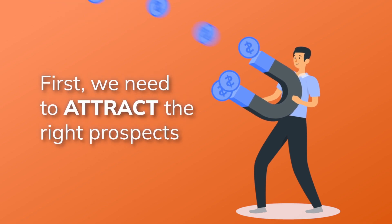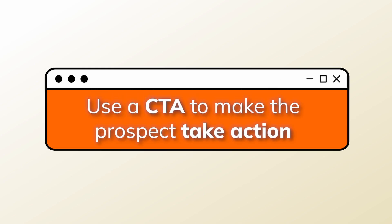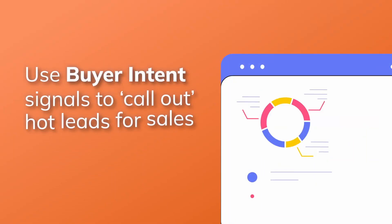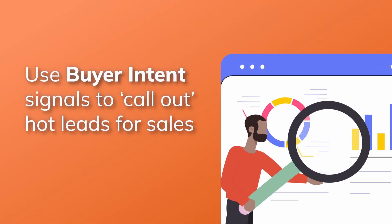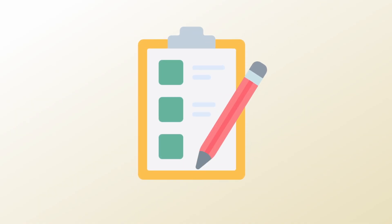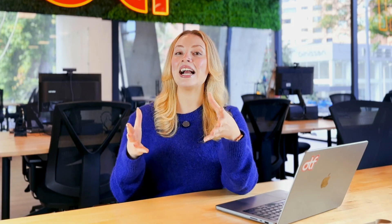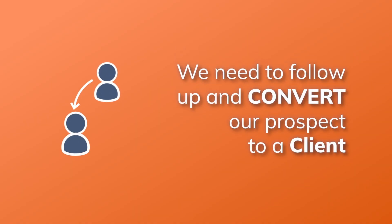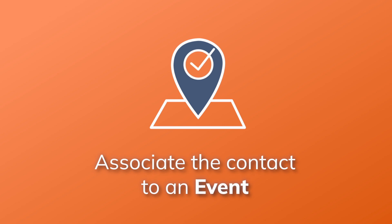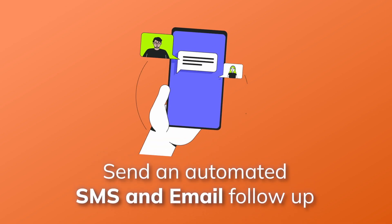Now let's see how these tools work seamlessly from your very first to last touch point. First, attract the right prospects: use a CTA on your email, website, or landing page to prompt action, then use buyer intent signals to flag hot leads for sales, and use a form to capture data directly into your CRM. Next, follow up and convert: once a form is submitted, associate the contact to an event and send an automated SMS and email follow-up, then add them to a nurture campaign and track progress with buyer intent and lead scoring tools.